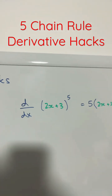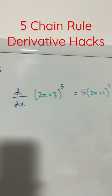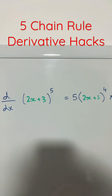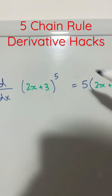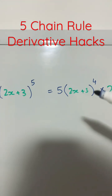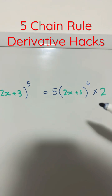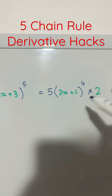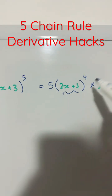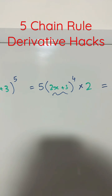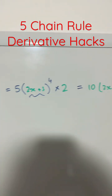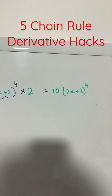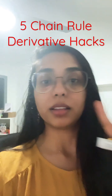For example, if you're deriving 2x plus 3 to the power of 5, the derivative would be 5 times 2x plus 3 to the power of 4, times the derivative of 2x plus 3, which is 2 — giving you 10 times 2x plus 3 to the power of 4. Number 2.